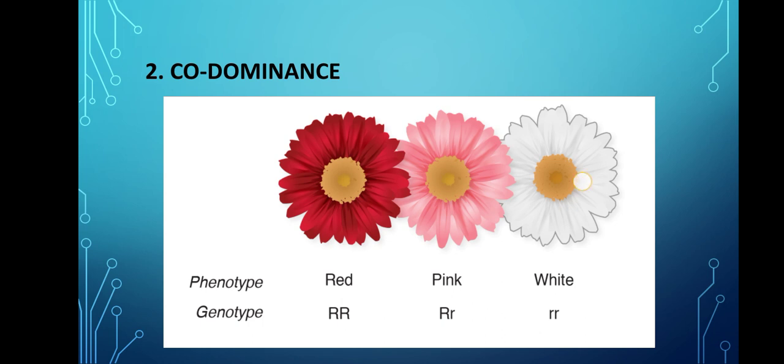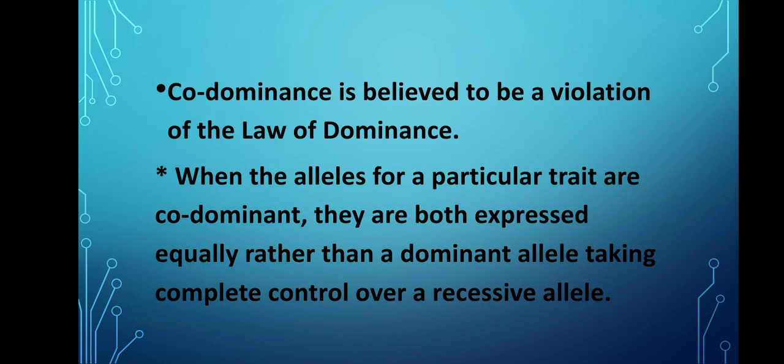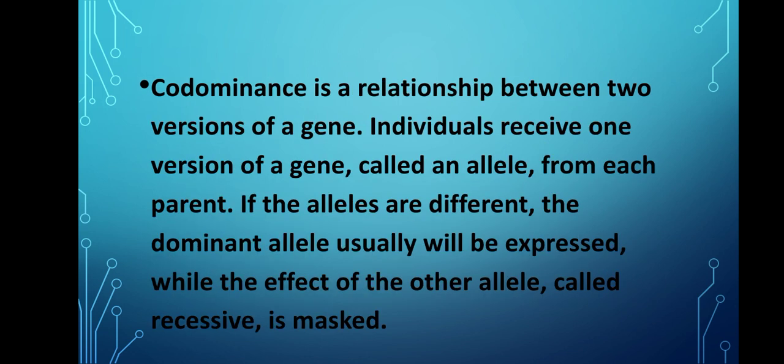Number two is codominance. Codominance is considered a violation of the law. When the alleles for a particular trait are codominant, they are both expressed equally rather than a dominant allele taking complete control over a recessive allele. This results in an organism with two different alleles expressing both at the same time. Codominance is a relationship between two versions of a gene. Individuals receive one version of a gene, called an allele, from each parent. If the alleles are different, the dominant allele is usually expressed, while the effect of the other allele, called recessive, is masked.